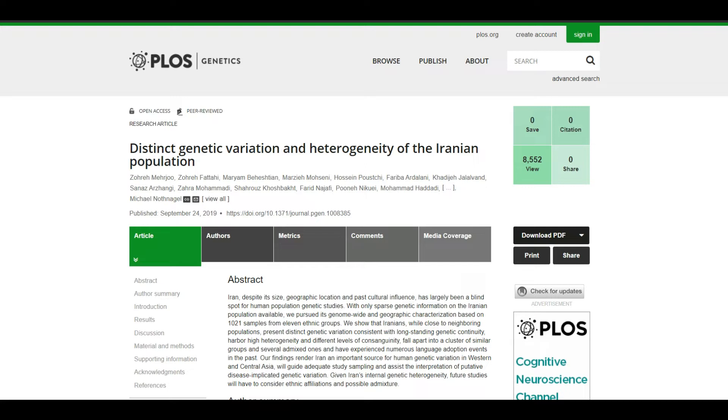It was titled 'Distinct Genetic Variation and Heterogeneity of the Iranian Population.' What it found was that the Iranian population is very heterogeneous and ethnic groups are similar but there are distinctions between them. It proved that Iranian ethnic groups have largely remained stable over the past 5,000 to 10,000 years.